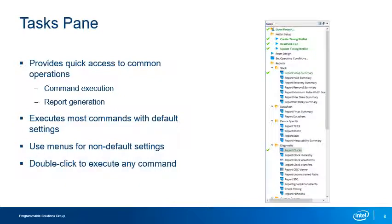The Tasks pane provides quick access to the most commonly used Timing Analyzer operations, such as setting up the Timing Netlist and generating commonly used reports. When you execute a task from the Tasks pane, it is performed with the task's default settings. When you need non-default options, use the equivalent command from the menus at the top of the interface. To execute a command or create a report, simply double-click the item in the pane.